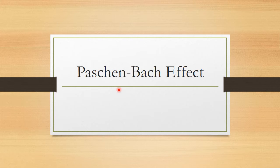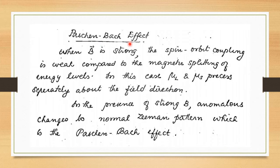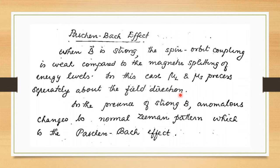Our next topic is the Paschen-Back effect. The Paschen-Back effect occurs when the magnetic field is strong and the spin-orbit coupling is weak compared to the magnetic splitting of energy levels. When the field B is strong and spin-orbit coupling is weak, μL and μS precess separately about the field direction.